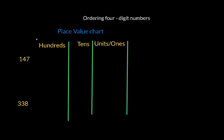We've got 147 and 338. Clearly 147 is made up of one set of 100, four sets of 10, and seven units, and 338 is made up of three sets of 100, three sets of 10, and eight units.